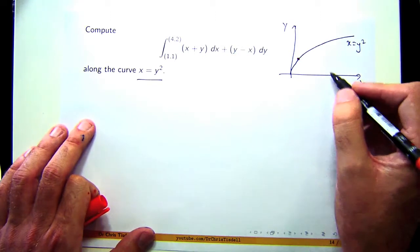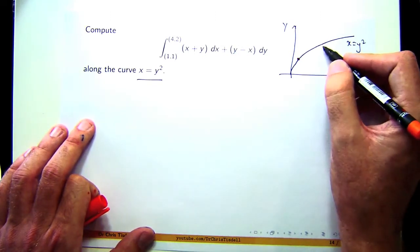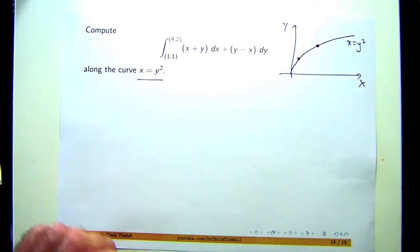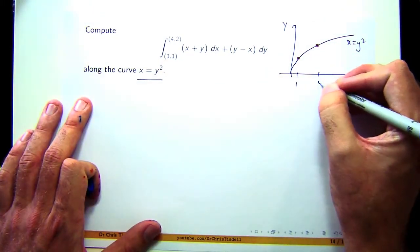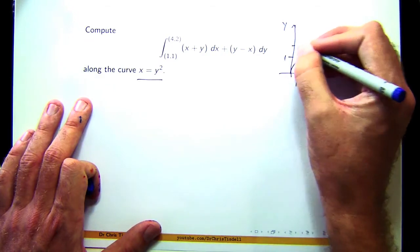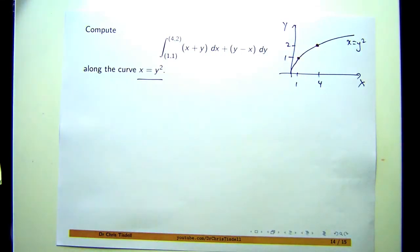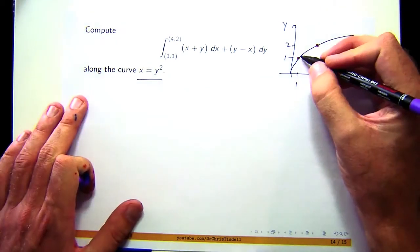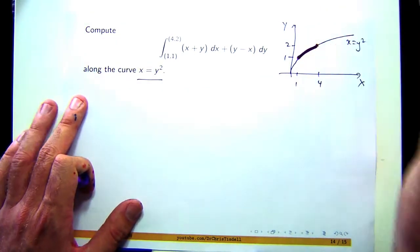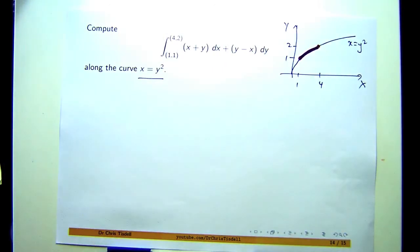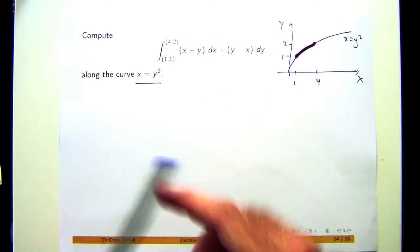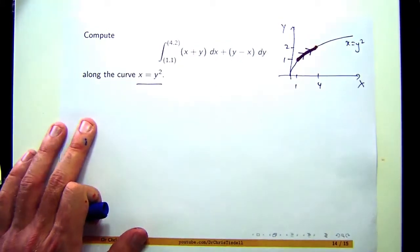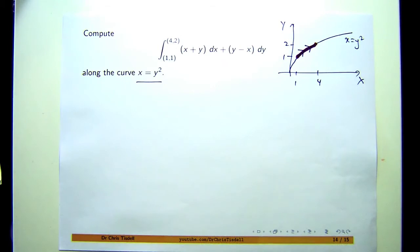And the point 4, 2. Let's say it's there. It's a badly drawn parabola, but anyway, you get the idea. And the curve that we're interested in integrating over is this little segment here. And you want to go from this point to that point, so there's a direction involved.